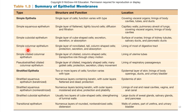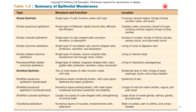For example, 'simple ciliated columnar epithelium': the word 'simple' tells you it's a single cell layer; 'ciliated' tells you these cells have cilia — little hair-like projections; 'columnar' tells you the shape of the cells; and 'epithelium' tells you which tissue type it is, meaning it's lining a surface of some sort. As we go throughout the semester, we'll be looking at lots of examples in different locations throughout the body.